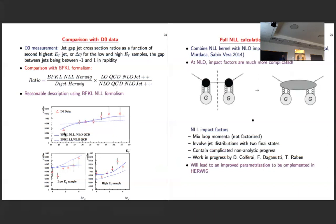We are now pursuing a more differential observable for the jet-gap-jet process — for instance, the mini-jets produced above a given threshold between the two leading jets, or the jet emission pattern as a function of rapidity. We are computing this in a Monte Carlo framework. Also, we are finalizing a full NLL calculation of the jet-gap-jet process, combining the NLL kernel with the NLL impact factor. By the end of this year we expect to have the full NLL calculation with the NLL impact factor for the jet-gap-jet cross-section.